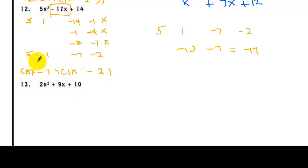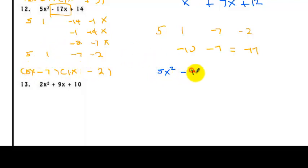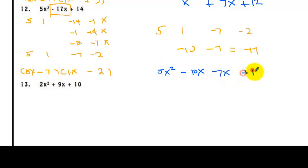Let's check the answer. First: 5x times 1x is 5x squared. Outer: 5x times −2 is −10x. Inner: −7 times 1x is −7x. Last: −7 times −2 is +14. The two middle terms are like terms and add to −17x, so we were able to get the original expression.